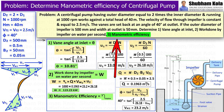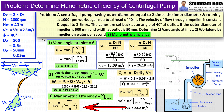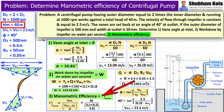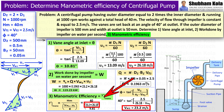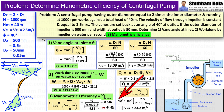Finally, manometric efficiency is given by the formula: manometric head HM divided by the head imparted by the impeller, which is Vw2 × U2 / g. Here HM = 40 m, Vw2 and U2 are already calculated, and g = 9.81 m/s². Calculating this gives manometric efficiency = 64.6%.